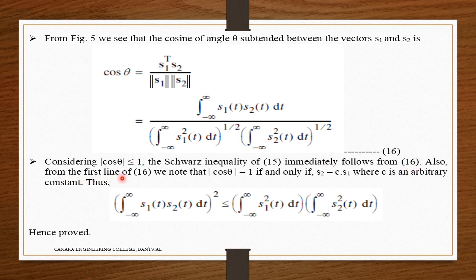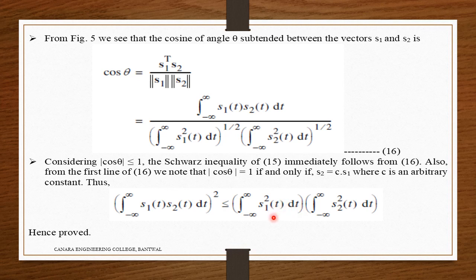From equation 16, |cos(theta)| = 1 if and only if S2 = C·S1, where C is an arbitrary constant. Thus the integration of S1(t)·S2(t) dt, the whole square, is less than or equal to the integration of S1(t) squared dt times the integration of S2(t) squared dt. Hence proved. This is how we prove the Schwarz inequality.